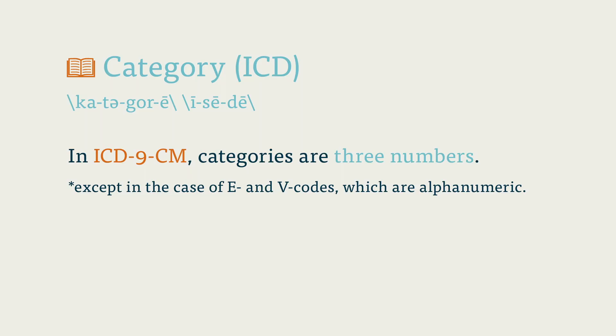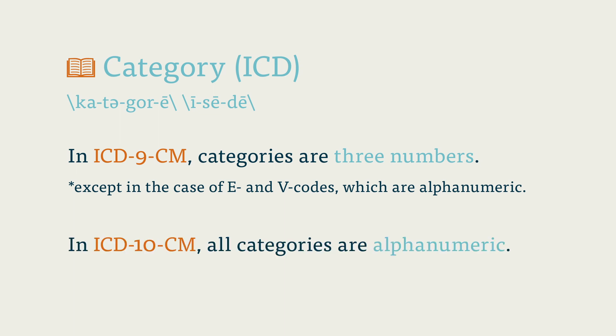In ICD-9-CM, categories are three numbers, except in the case of E and V codes, which are alphanumeric. In ICD-10-CM, all categories are alphanumeric.